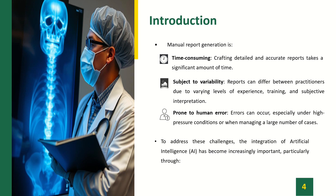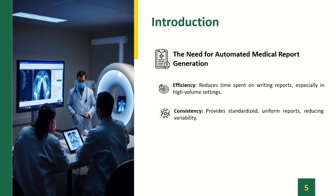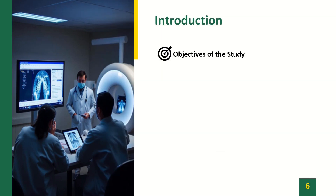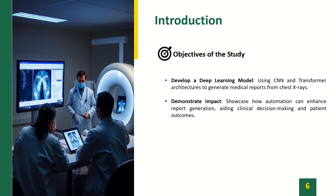Prone to human error, errors can occur especially under high-pressure conditions or when managing a large number of cases. To address these challenges, the integration of artificial intelligence has become increasingly important, particularly through combining NLP and computer vision to help in understanding and generating accurate medical text. Why do we need automated medical report generation? Firstly, efficiency — it reduces time spent on writing reports, especially in high-volume settings. Secondly, consistency — it provides standardized, uniform reports, reducing variability. Thirdly, support for radiologists — it acts as a decision-support tool, alleviating workload and reducing burnout. Our paper aims to develop a deep learning model using CNN and transformer architecture to generate medical reports from chest X-rays, showcasing how automation can enhance report generation, clinical decision-making, and patient outcomes.